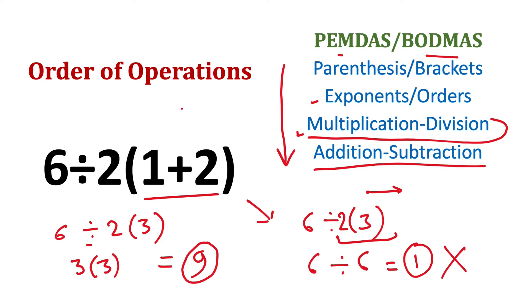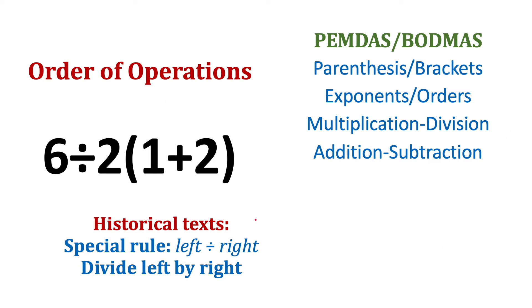But it had some significance. Historically, in some historical texts, there was some special privilege given to this division operation. So everything on one side of it is left and the other side is right, and we divide everything on the right by the left. So if it was written, then it would mean this thing. Whereas if we follow our order of operations, it will be x divided by 3 and then y.